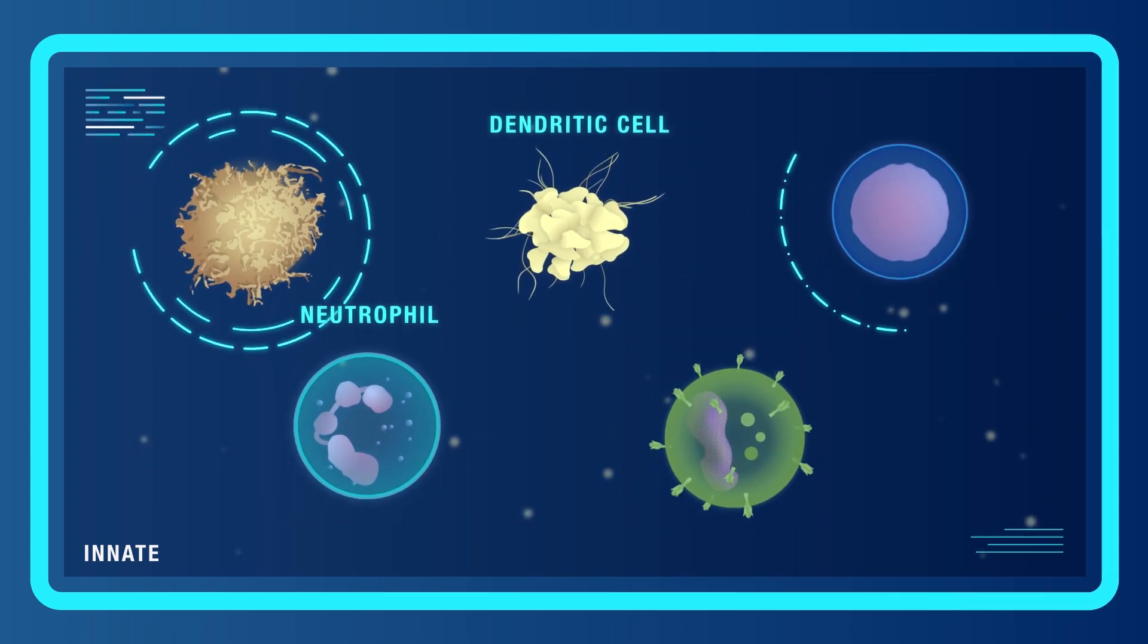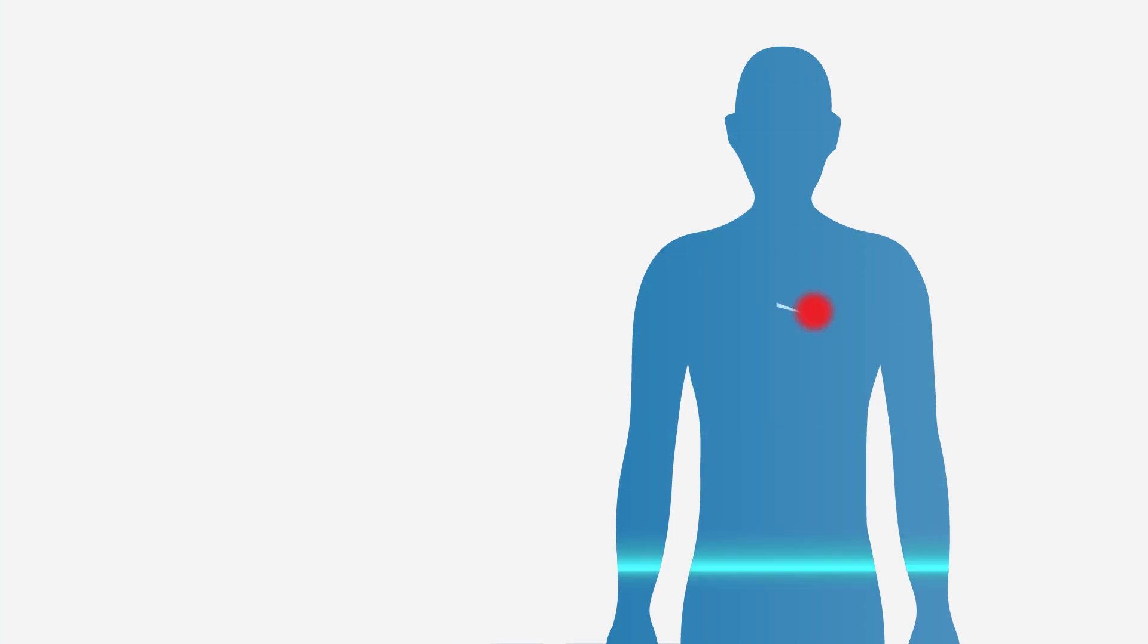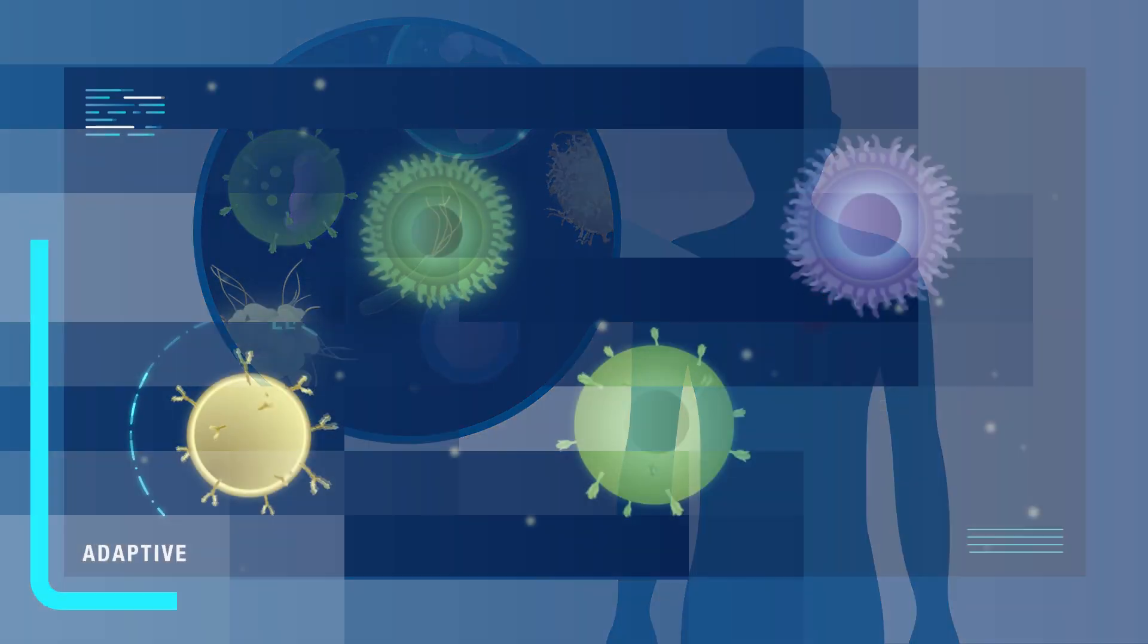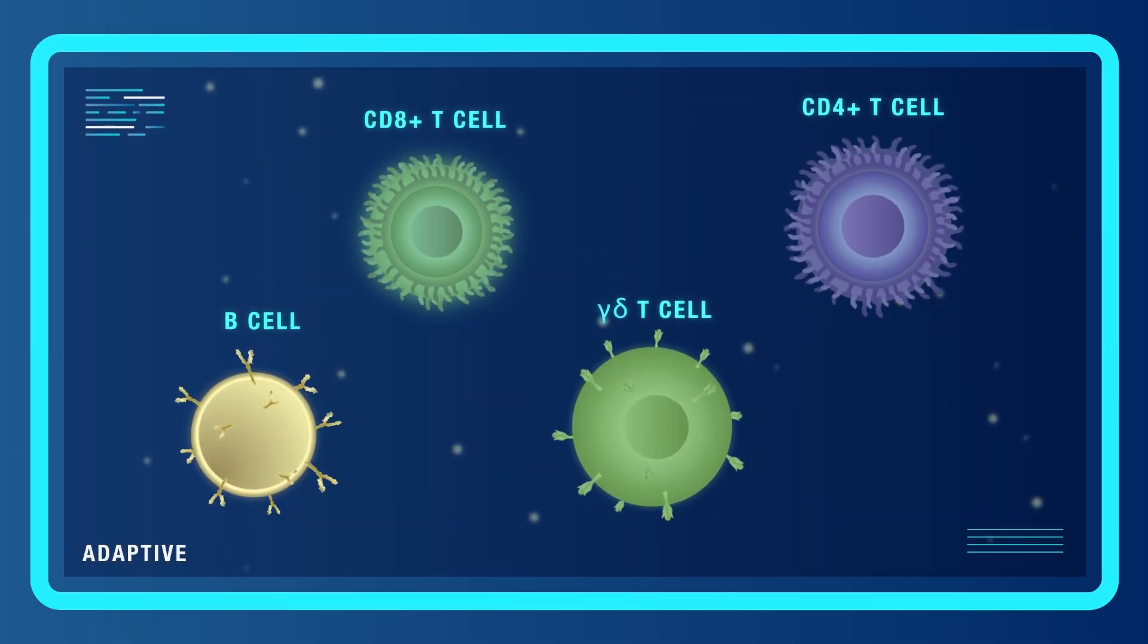The innate immune system is the body's first line of defense, which immediately identifies threats and recruits adaptive immune cells to the site of foreign intruders. The adaptive immune system is the body's targeting mechanism and long-term memory,